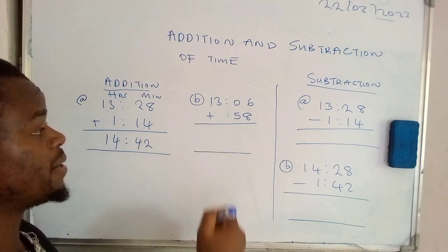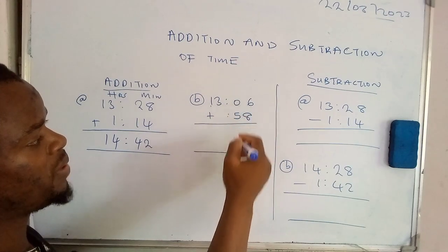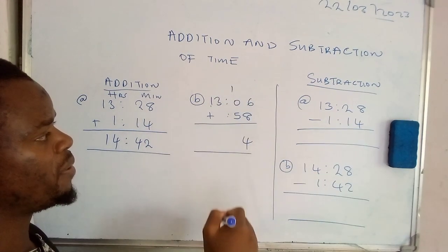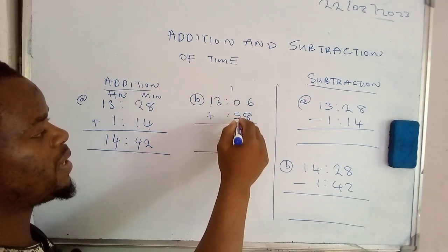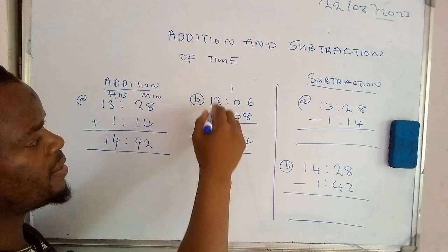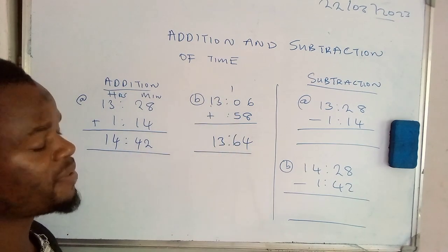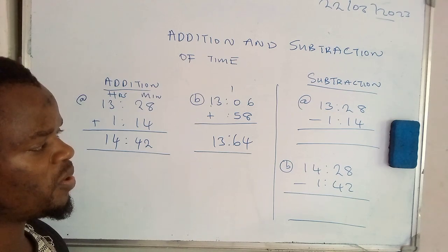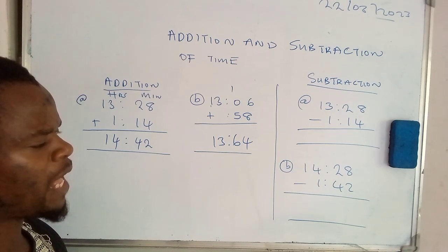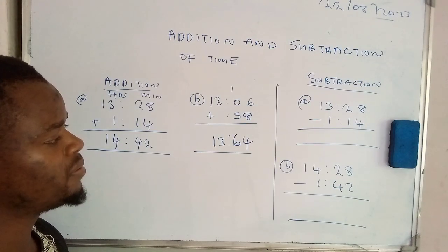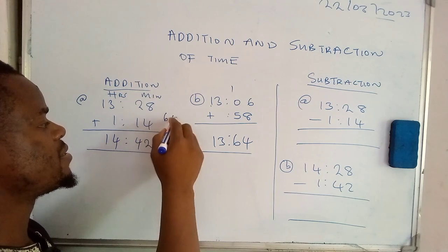Let's move on to the second example. We add 6 to 8, that's actually 14. Then we remember 1. 1 plus 0 plus 5, that's actually 6. Then 13 plus 0, that's 13. When you check this out, you're going to notice one thing: there's no time such as 13:64.